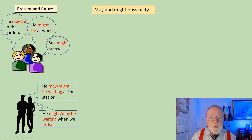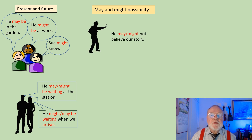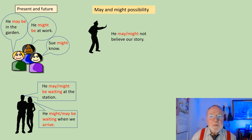Here's a way of expressing possibility using the negative form of the verbs: he may not, or he might not, believe our story.